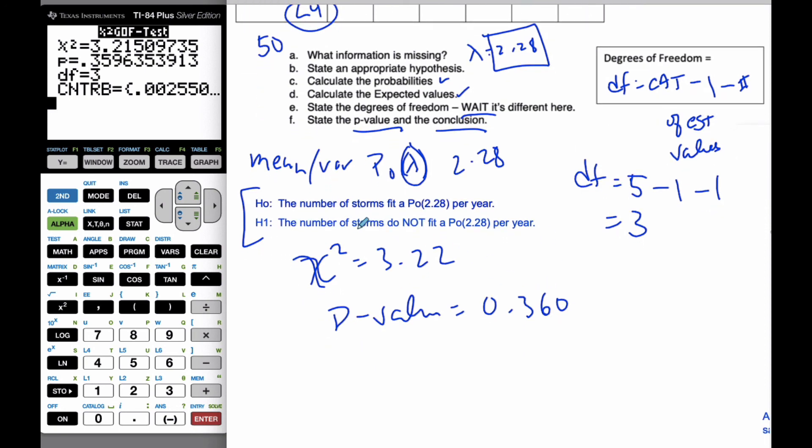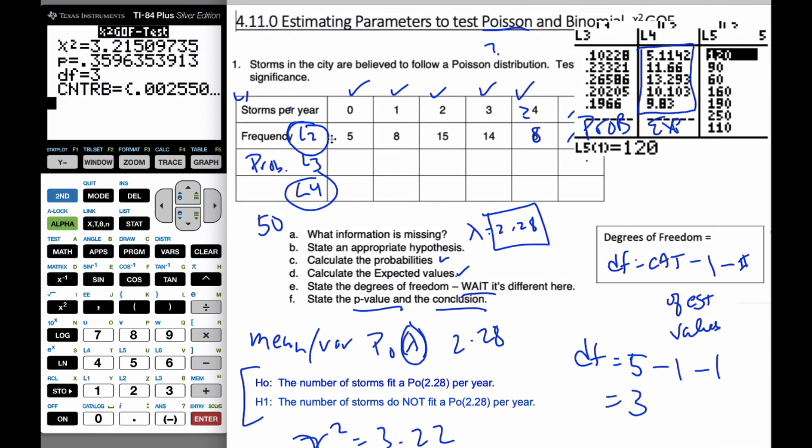And so now my conclusion, I put this all together, what I can say. Because my p-value is large, larger than alpha, we fail to reject the null hypothesis and claim insufficient evidence to say the storms do not fit a Poisson distribution of 2.28. Hence, we believe storms do follow this Poisson distribution. Lots of calculator work, making sure you understand what the values are and what you're doing is really important.